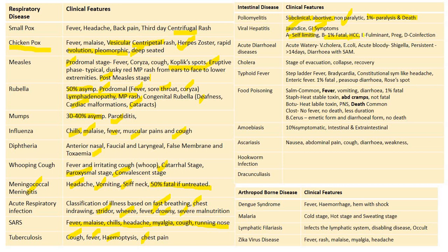Acute diarrheal disease: acute watery diarrhea — the most common cause is Vibrio cholerae and E. coli. Acute bloody diarrhea — the most common cause is Shigella. Persistent diarrhea is when diarrhea lasts more than 14 days. Diarrhea is classified into four types. Cholera has three stages: stage of evacuation, stage of collapse, and stage of recovery. Typhoid presents with stepladder fever, bradycardia, and headache as the triad.